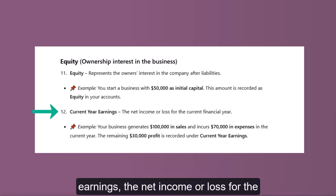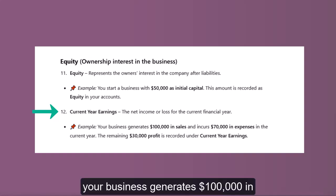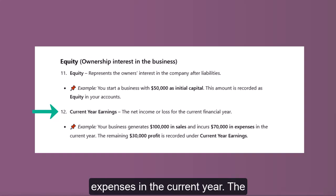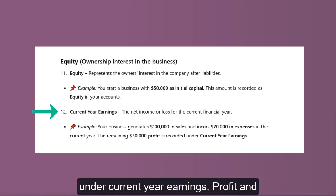Current Year Earnings: the net income or loss for the current financial year. For example, your business generates $100,000 in sales and incurs $70,000 in expenses in the current year. The remaining $30,000 profit is recorded under current year earnings.